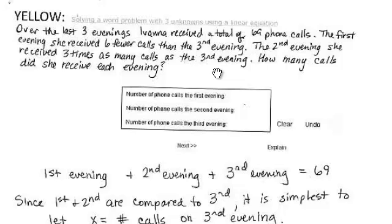The thing that's at the end of the sentence is usually the easiest thing to make be your unknown, so I'm going to do that. I'm going to let X be the number of calls on the third evening.